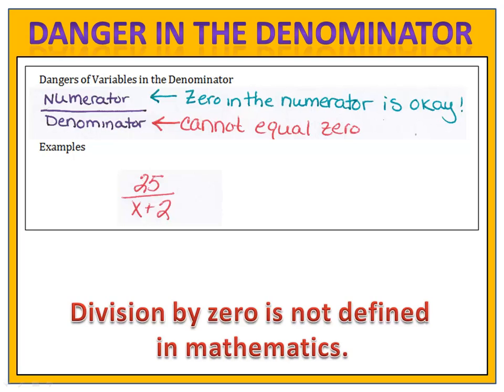Examples of fractions that we might have to be careful with are things like 25 over x plus 2, 3 plus 2x over x minus 4, or 25 over x. The danger is that when we put numbers into this fraction for x, we have to be sure that it doesn't cause the expression to become undefined.